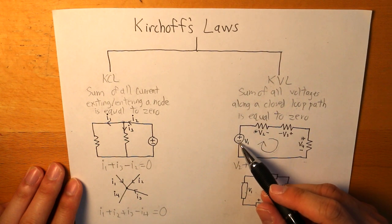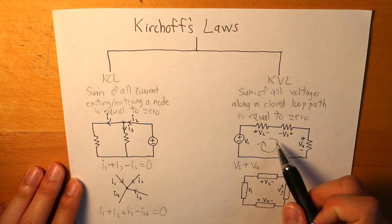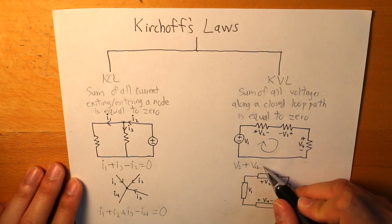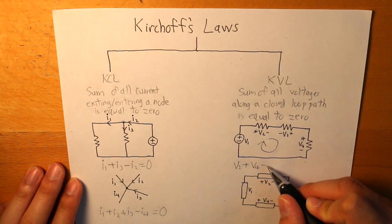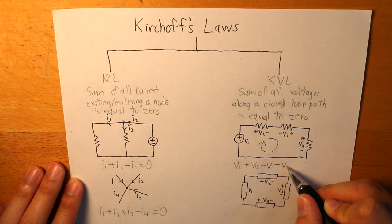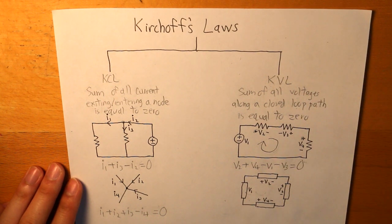And then V1 and V3 is going to be the opposite because the path is entering through the negative. So therefore, we have minus V1 and then minus V3. And that is our KVL equation.